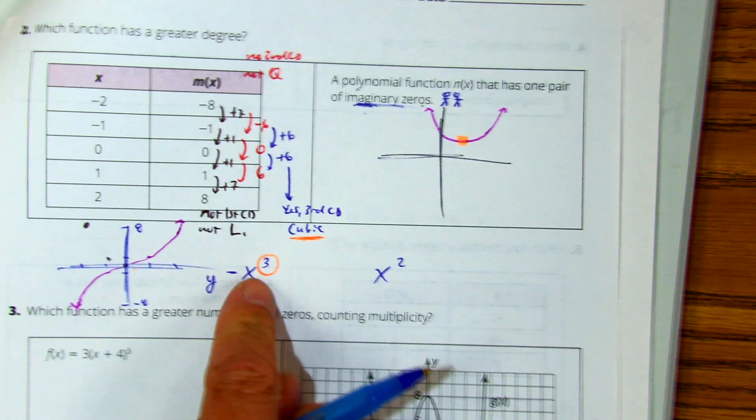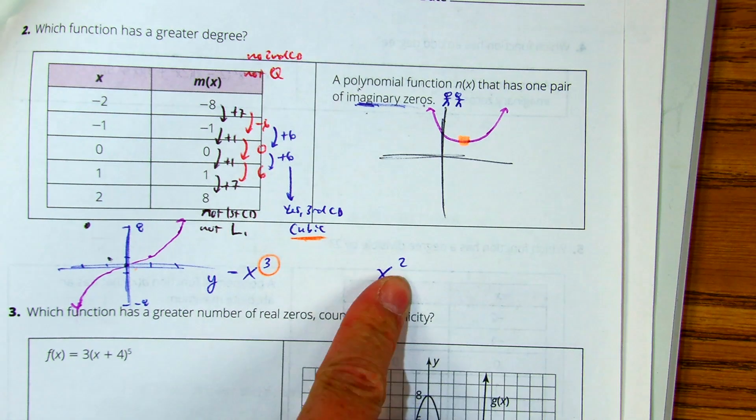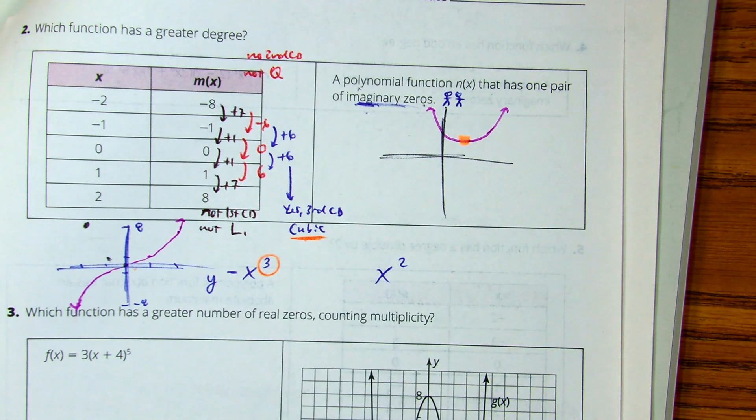So you're comparing a third degree polynomial to at least a second degree polynomial. Your answer is left or right side? The left is a greater degree.